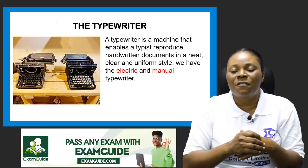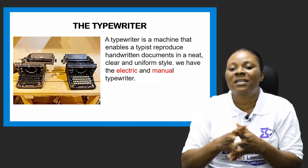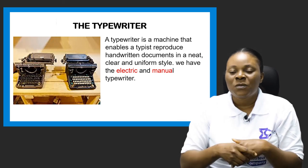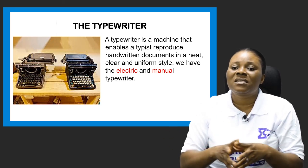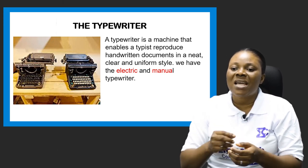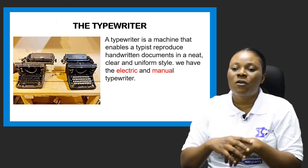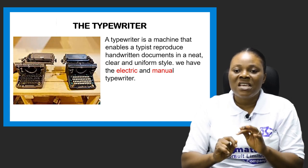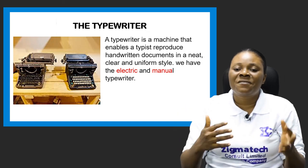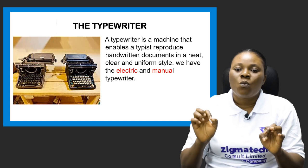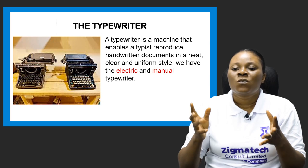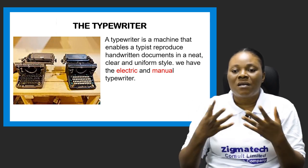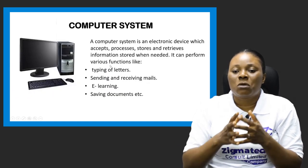The first equipment is the typewriter. So many of us have not even seen a typewriter before because it is more or less now an outdated machine. The typewriter is a machine that enables a typist to reproduce or produce handwritten documents in a neat, clear, and uniform style. The major use of the typewriter is for typing. It has keys that you strike, a part where you roll in your paper, and an ink that helps characters show on the paper. We have two types: the electric typewriter and the manually operated typewriter.